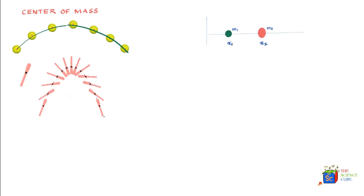Let's see what happens when you have a system of masses rather than a single mass. Say this system of masses is at distances x1 and x2 from the origin. You have mass m1 and mass m2. Intuitively, you'd know the center of mass would tilt more towards m2 because it looks bigger than m1 — assuming both have the same density. But how would you exactly find that?